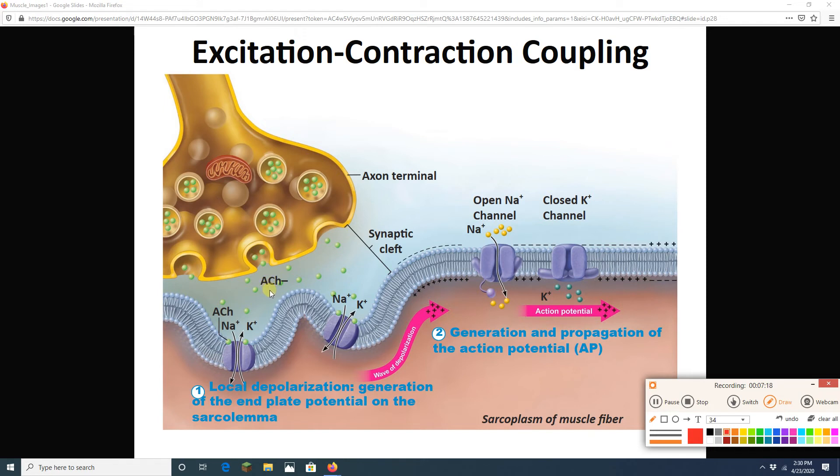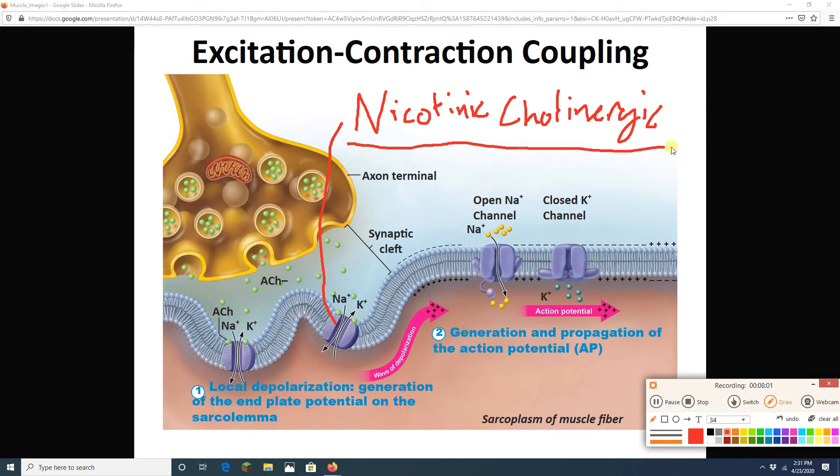Then we have the exocytosis of the acetylcholine. The acetylcholine will drift through the synaptic cleft and bind to nicotinic cholinergic receptors. That guy is a nicotinic cholinergic receptor. Cholinergic because it is binding to acetylcholine. Nicotinic because it can also bind to and be activated by nicotine.